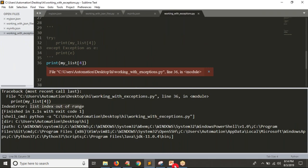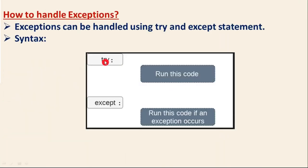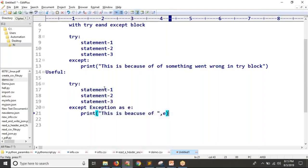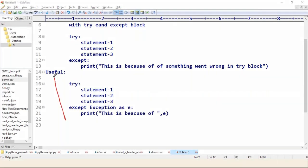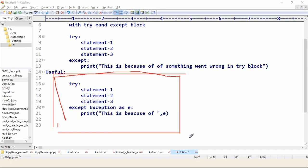That is the reason we use the try and except block. The syntax is: try — write the main code you want to run; except — write what you want to display if something goes wrong. If you use 'except Exception as E' and print E, you get the exact error message. This is the useful way to handle exceptions in your code.